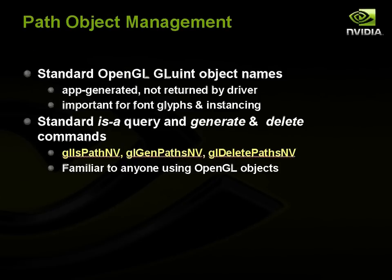For path object management, the standard OpenGL way uses GLuint or 32-bit unsigned names. These are application-generated in NV path rendering, just like texture objects or display lists. They're not returned by the driver, which is important for font glyphs and instancing so you know the ordering matches — for example, how characters appear in Unicode or any font standard. There are standard API calls to determine if a handle is a path, to generate paths, and to delete paths, all familiar to anyone using OpenGL objects.